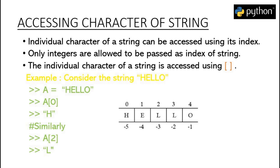Similarly, if we want to find out what is located at index 2, we will write A with 2 in the brackets and we will get L as the output.